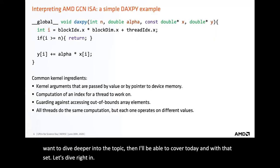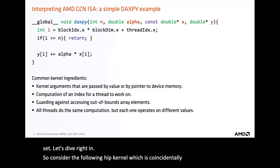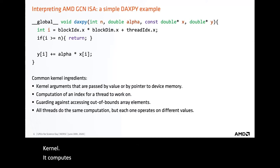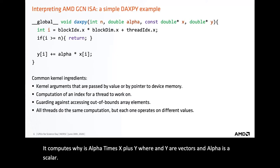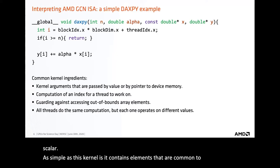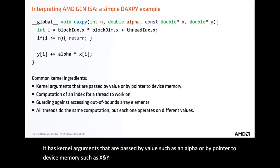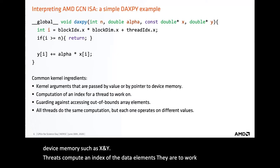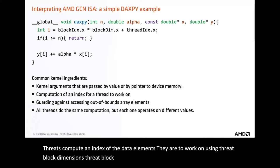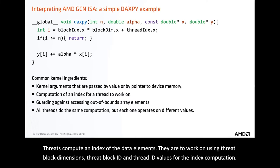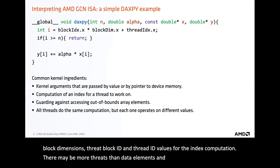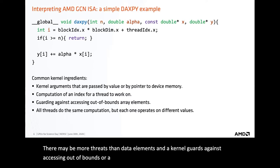Consider the following HIP kernel, which is coincidentally also a valid CUDA kernel. It computes Y = alpha * X + Y, where X and Y are vectors and alpha is a scalar. As simple as this kernel is, it contains elements common to nearly all kernels. It has kernel arguments passed by value, such as N and alpha, or by pointer to device memory, such as X and Y. Threads compute an index of the data elements they are to work on, using thread block dimensions, thread block ID, and thread ID. There may be more threads than data elements, and the kernel guards against accessing out-of-bounds array elements.